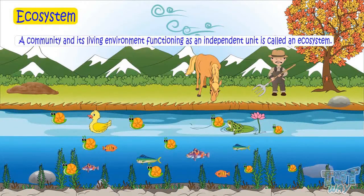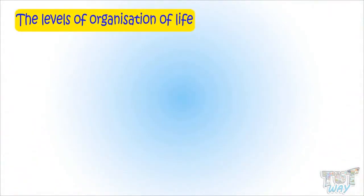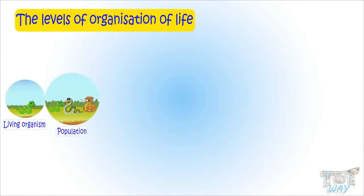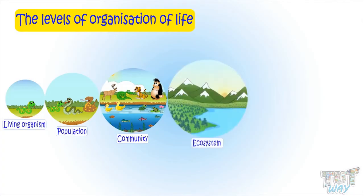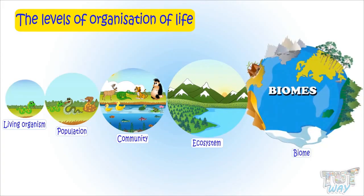Let's try to understand the levels of organization of life. The first level is a living organism, then is the population of that organism, then the community of many populations living in an area, and then the community along with its environment forms the ecosystem. And then many ecosystems form a biome. We will learn about biome in our next lesson.